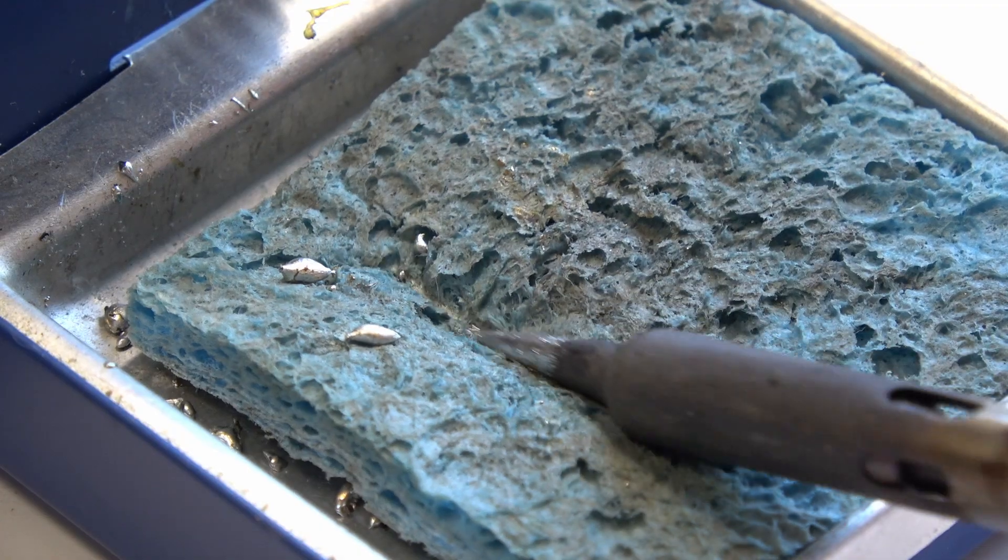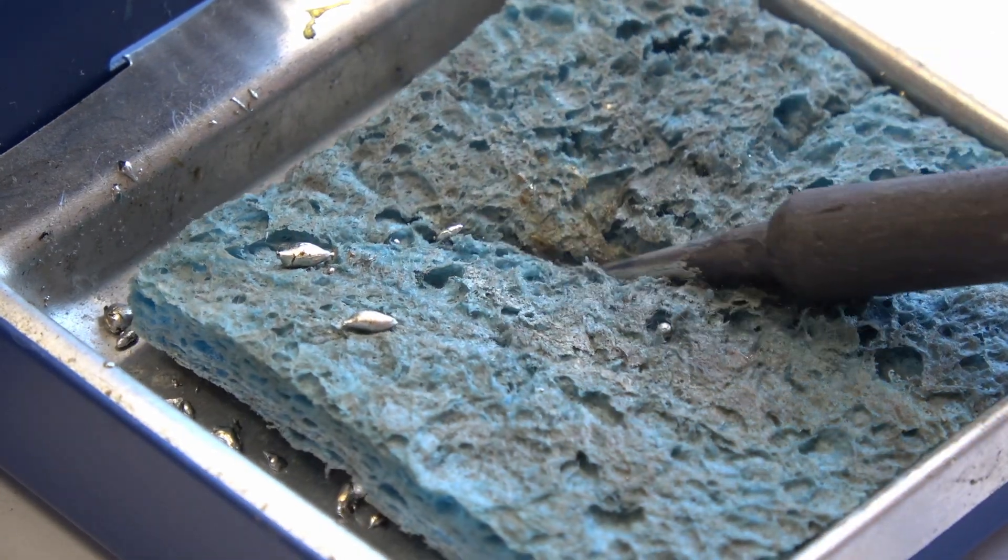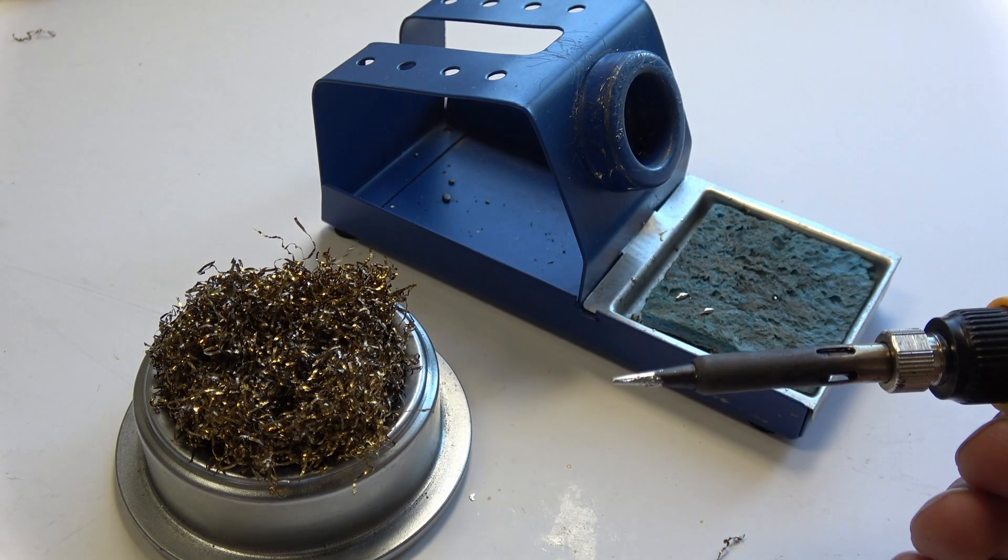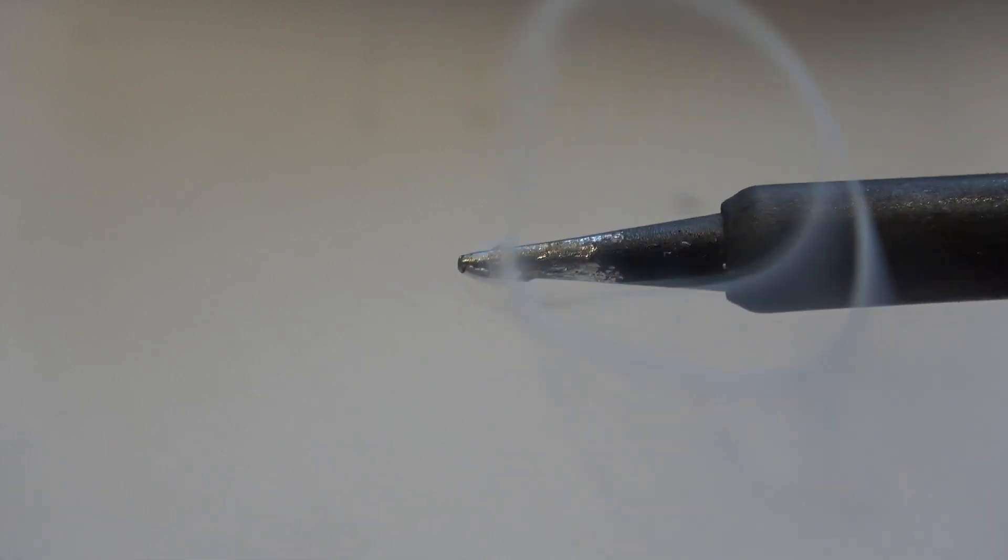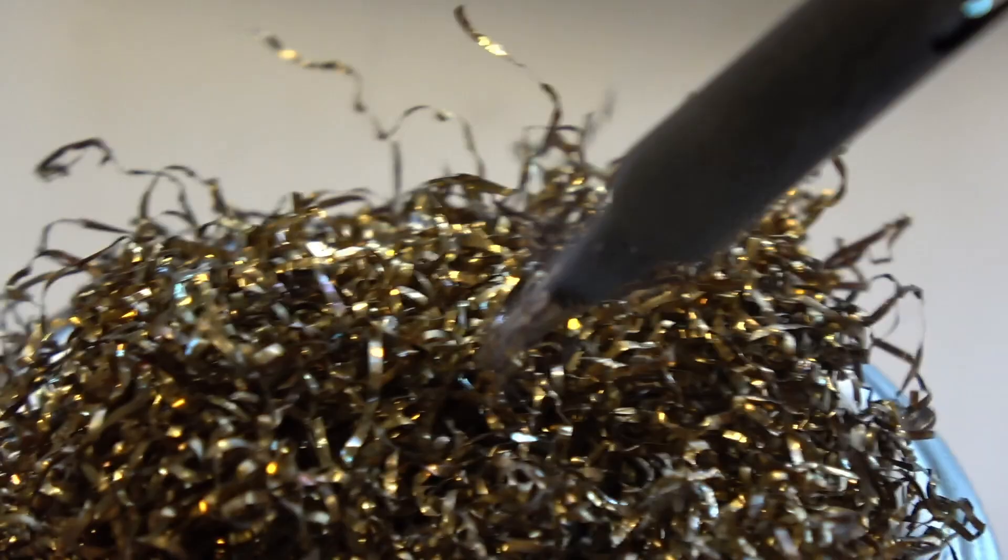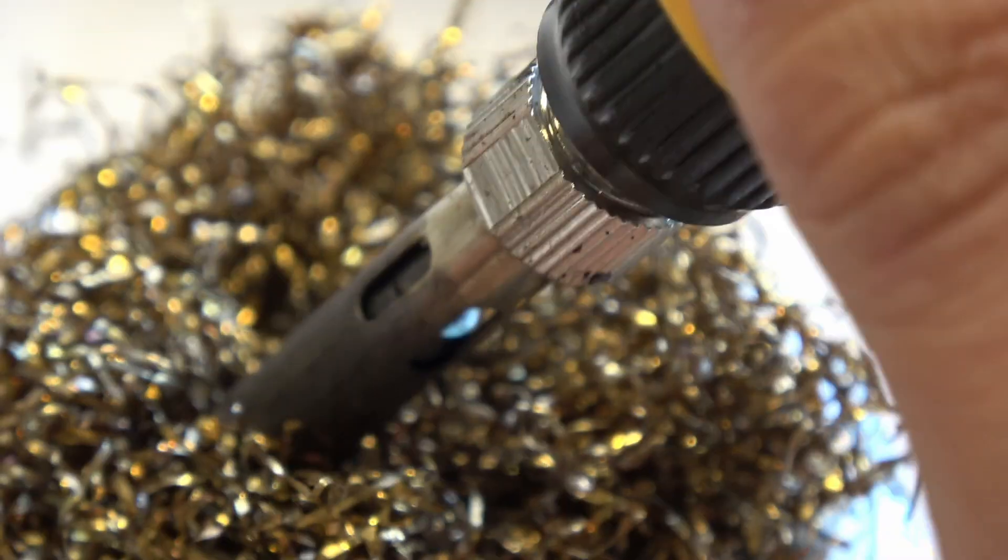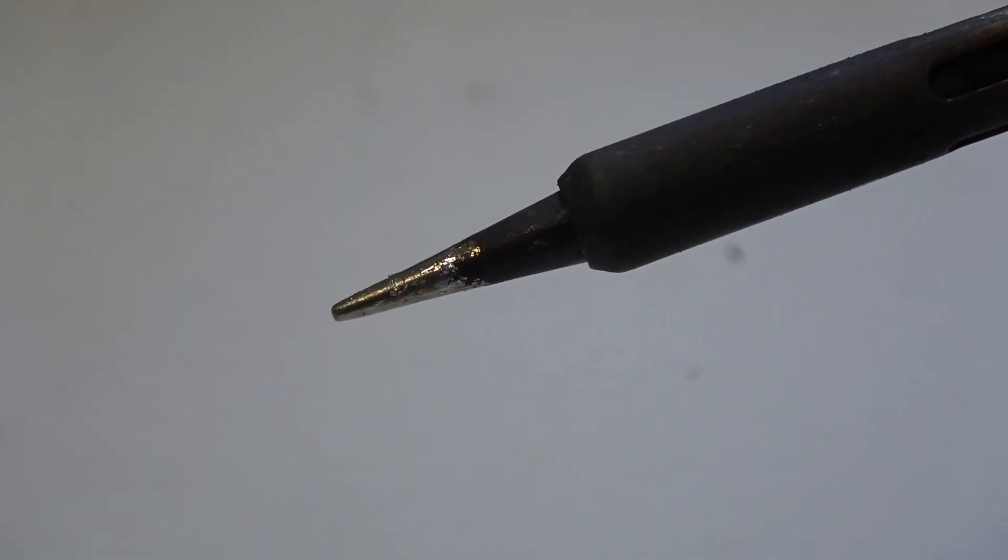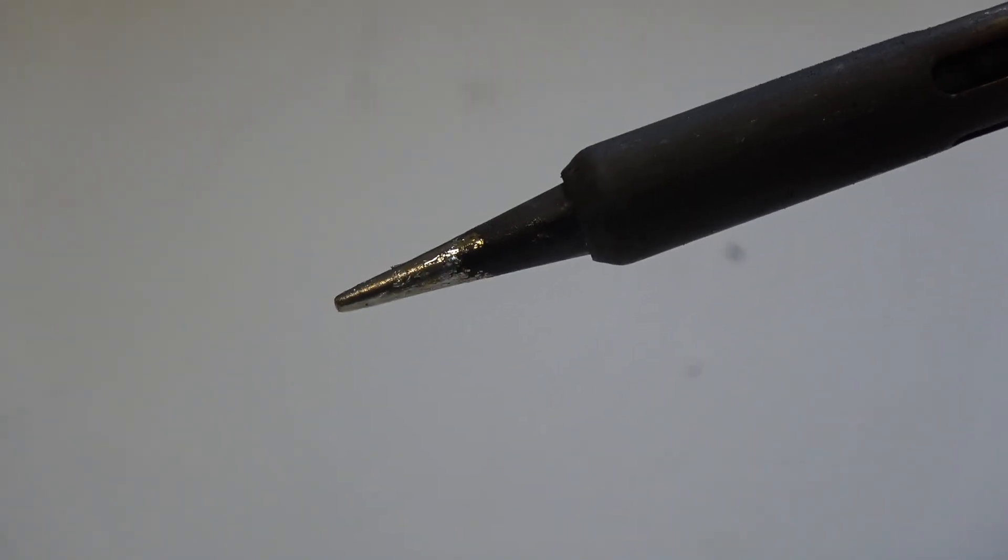Pretty much every time you use your iron, what you want to do is either rub it into the wet sponge or dab it into the steel wool. What that's going to do is that's going to clean your tip. You always want to be working with a clean tip that has just a dot of solder on it. Do that in between every single thing that you do—always clean your tip.